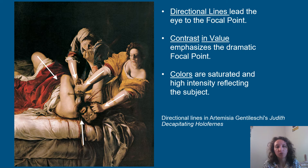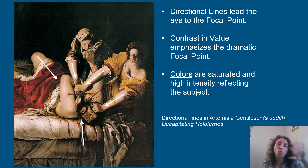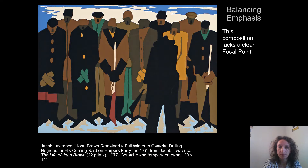There's the contrast in value between the foreground figures and the background — there is barely a background at all, it's just all blackness. The colors in the foreground are highly saturated and really brought forward. This artwork is Judith Decapitating Holofernes. We will talk more about the storyline associated with this artwork when we come to the Baroque era.